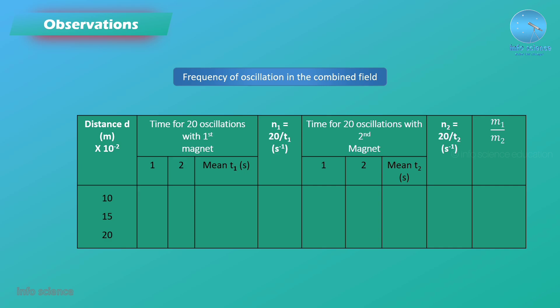The first column is time for 20 oscillations with the first magnet, that is N1. The second column is time for 20 oscillations with the second magnet. First, use the first column record, and second, use the second column record.